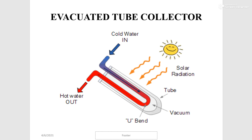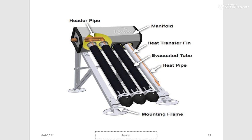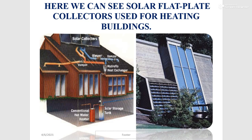The heat inside the inner glass tube stays there and is eventually extracted for use. Evacuated tube solar collectors can be arranged in an array to form a larger system. Solar flat plate collectors are also used for heating buildings.